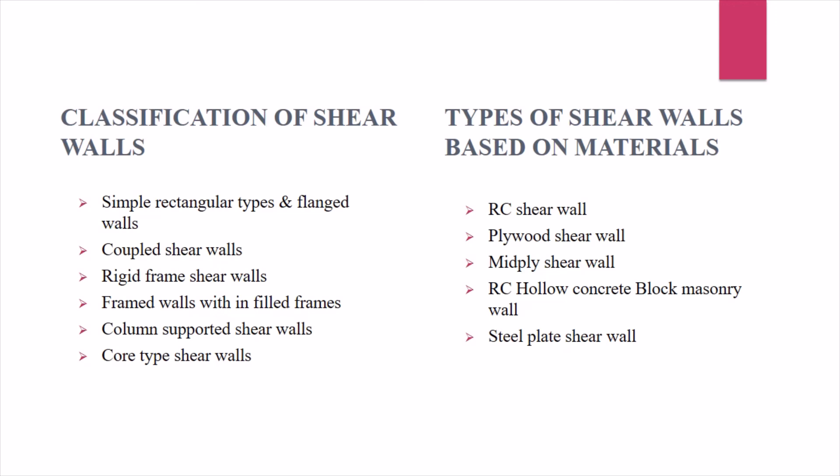The classification of shear walls includes: simple rectangular types, flanged walls, coupled shear walls, rigid frame shear walls, framed walls with infilled frames, column-supported shear walls, and core-type shear walls. Based on material, shear walls can be made with reinforced concrete, plywood, mid-ply, hollow concrete block masonry, or steel plate. With this, the second unit concludes and the next lecture will cover third unit topics.